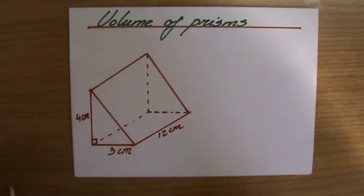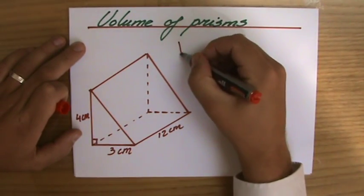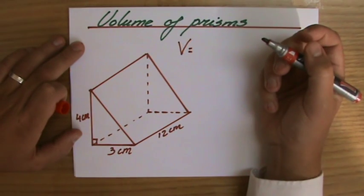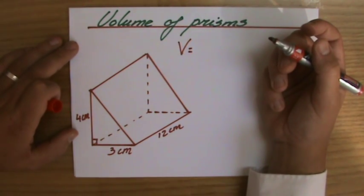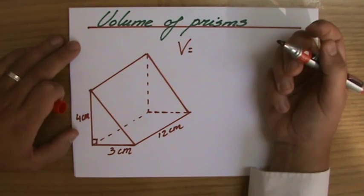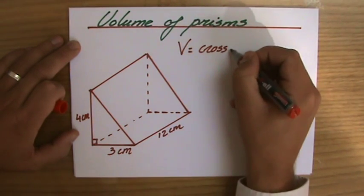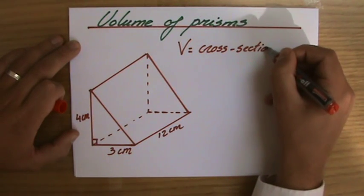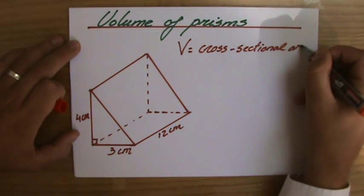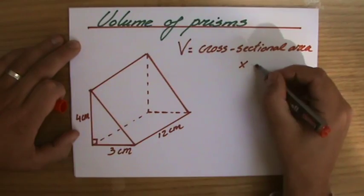And how do you find the volume of a prism? Well, the volume is going to be the area of the cross section times the length. So I'm just going to write it down. The cross sectional area times the length.